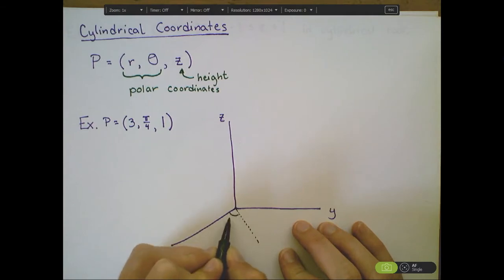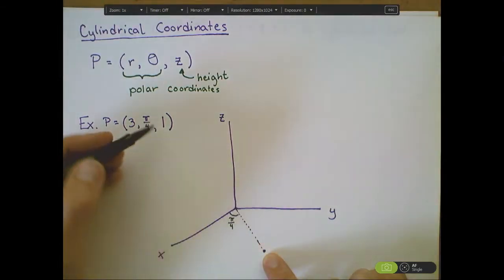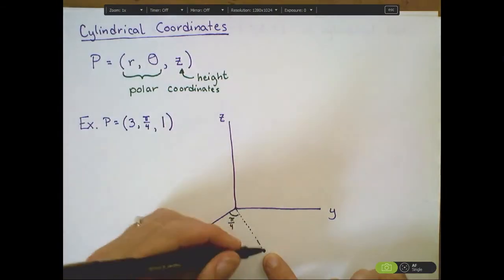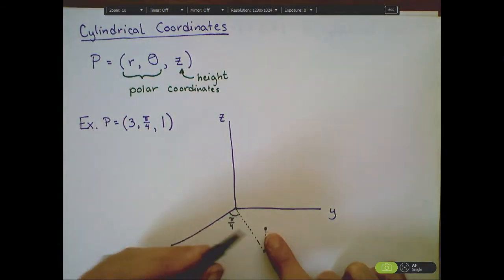So this is representing pi over 4, which is a 45 degree angle with the x-axis. And I'm going out a distance of 3 down here in the xy-plane. Once I've placed this point in polar coordinates on the xy-plane, now I'm going to look at the height coordinates in Z. And I know I go up a unit of 1 in height.